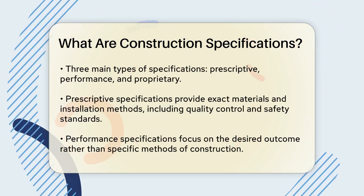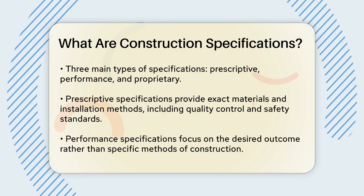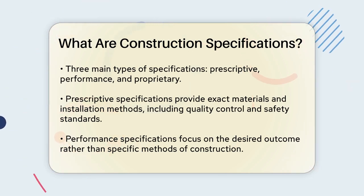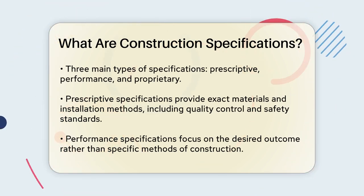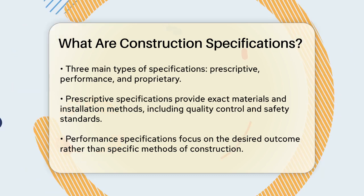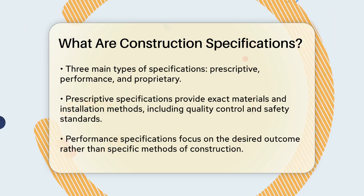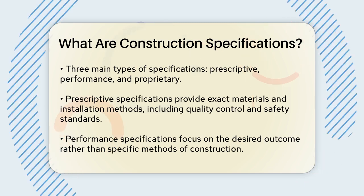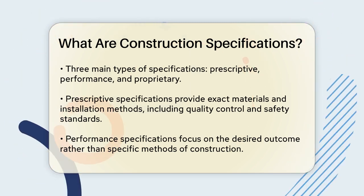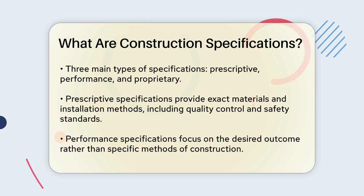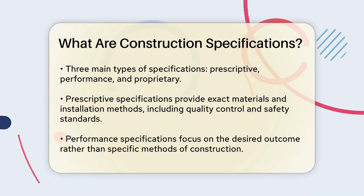There are three main types of construction specifications: prescriptive, performance, and proprietary. Prescriptive specifications are very detailed, telling contractors exactly which materials to use and how to install them. For example, they might specify the type of concrete to use, how to mix it, and how to lay it down. These specs also include information on quality control, testing requirements, and safety standards.